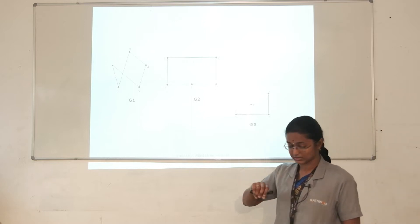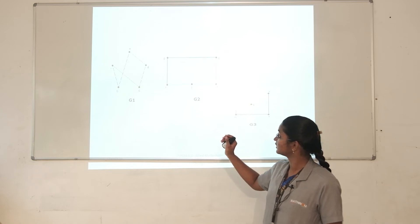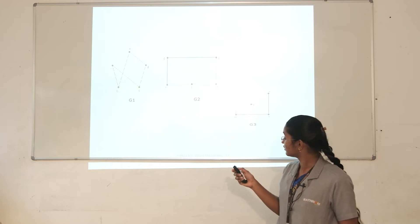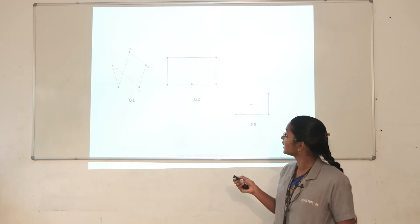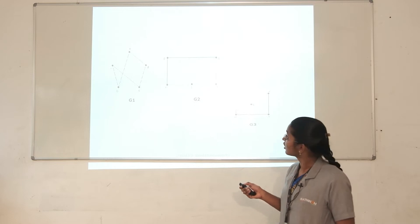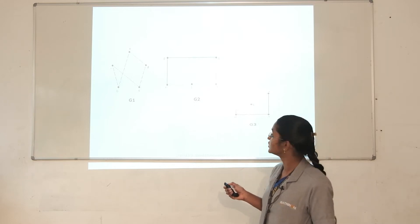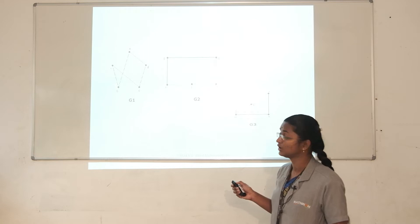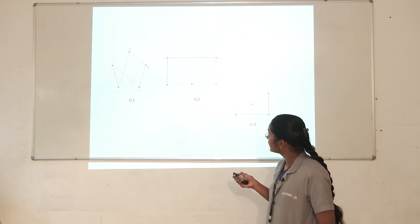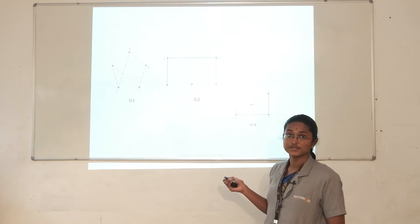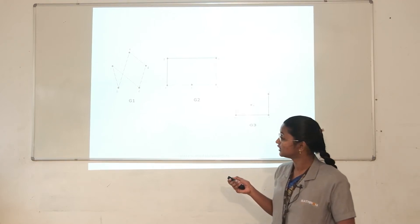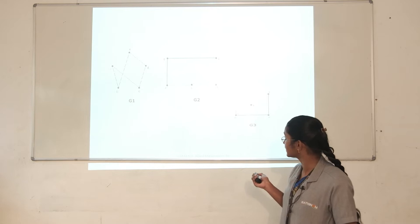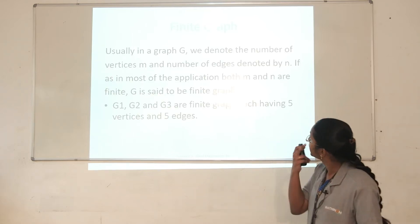We can construct graphs like this, where in G1 we are considering five nodes A, B, C, D, E. These are all terminal points, otherwise called nodes. The lines connecting between the vertices are called edges. In G1, G2, G3, all these graphs have five vertices and there are five edges in each of these three graphs.